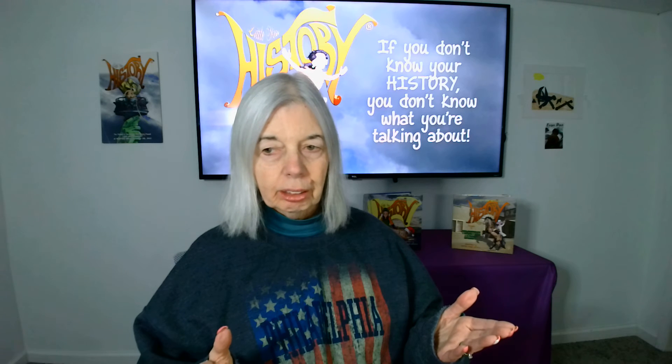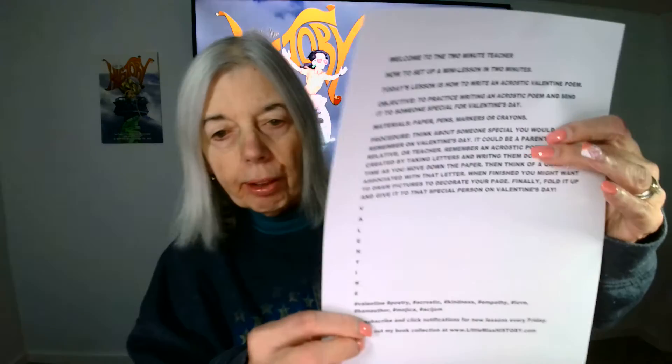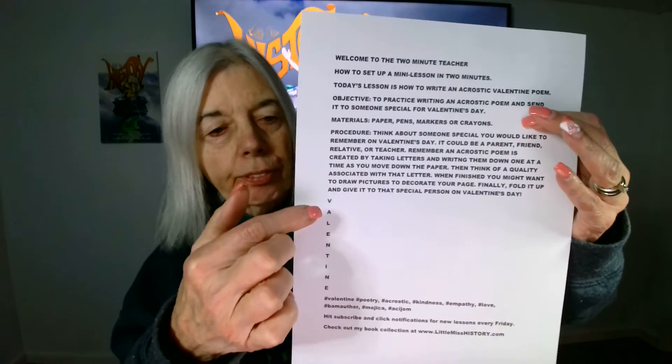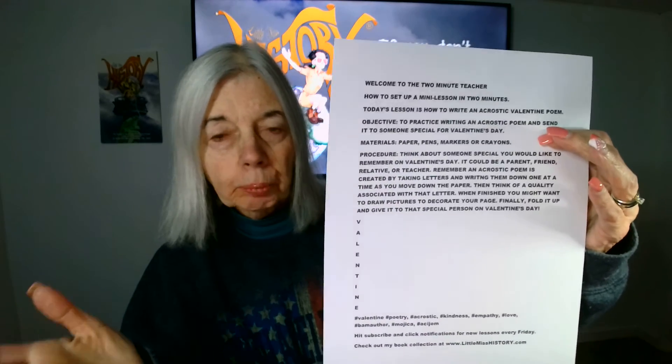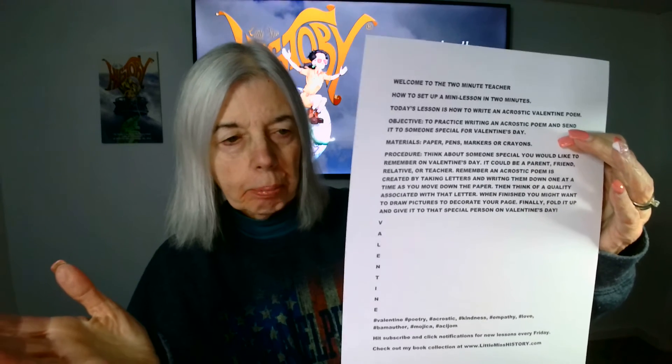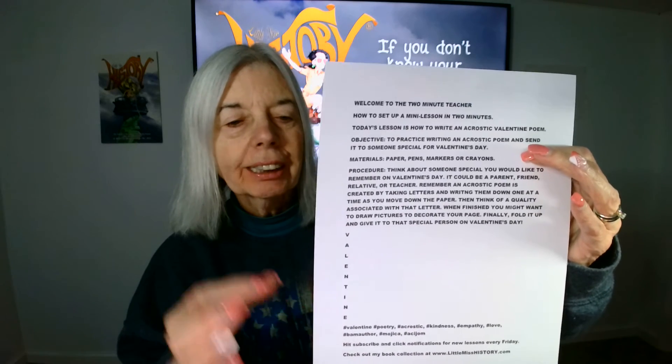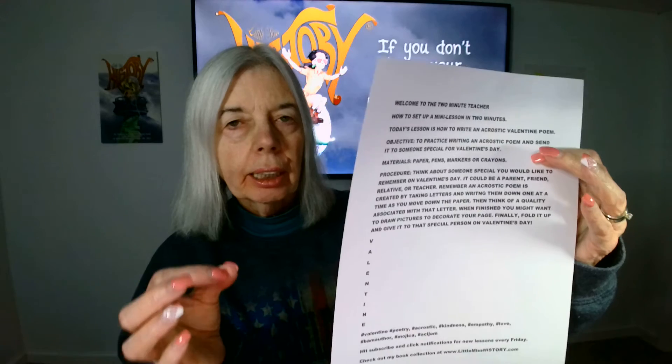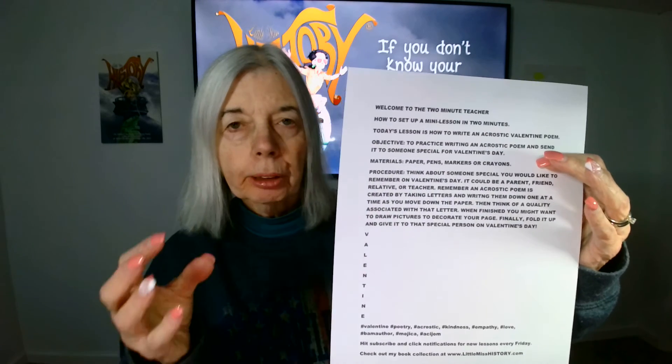The procedure is simple. We're going to take the word valentine and write one letter at a time down the page, so it will look like V-A-L-E-N-T-I-N-E going down the page. The child might want to use blank paper or lined paper — it doesn't really matter. As the child goes down the list of letters, you're going to ask the child to think of a quality that he or she associates with that person.